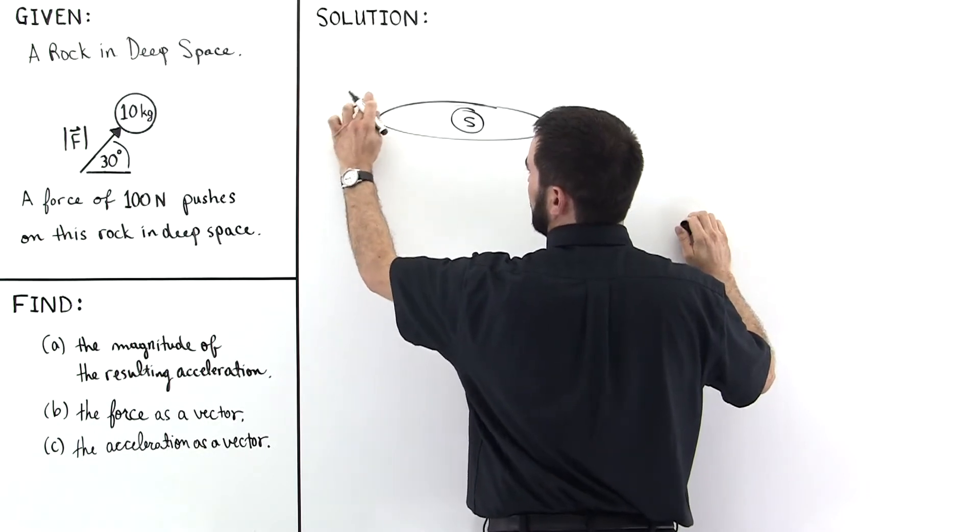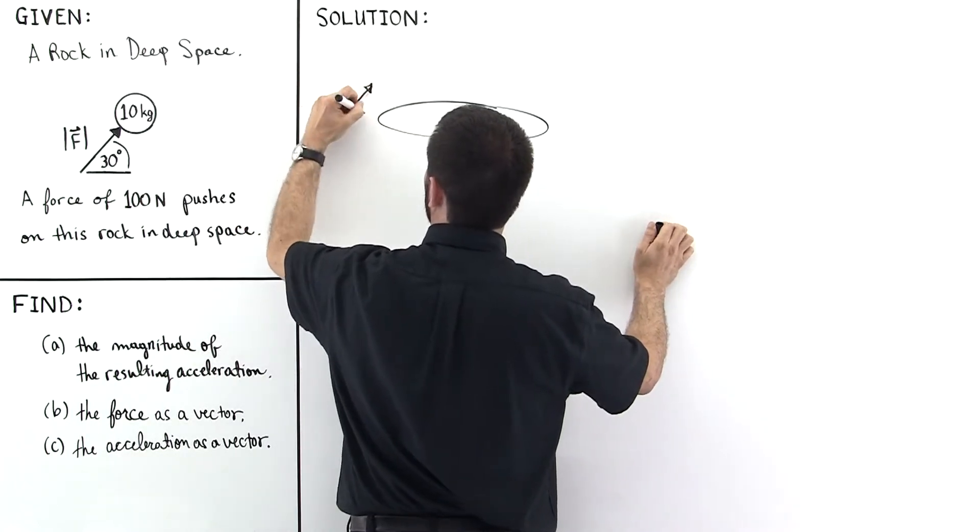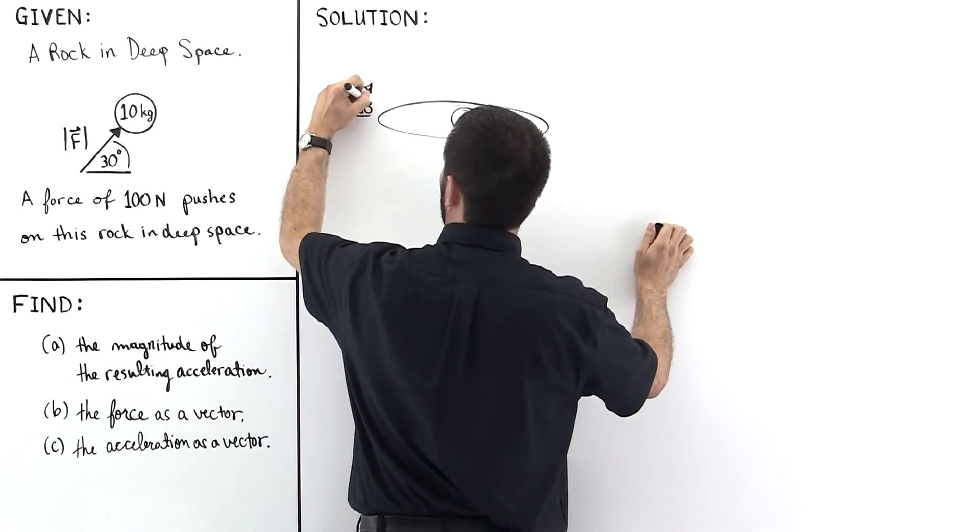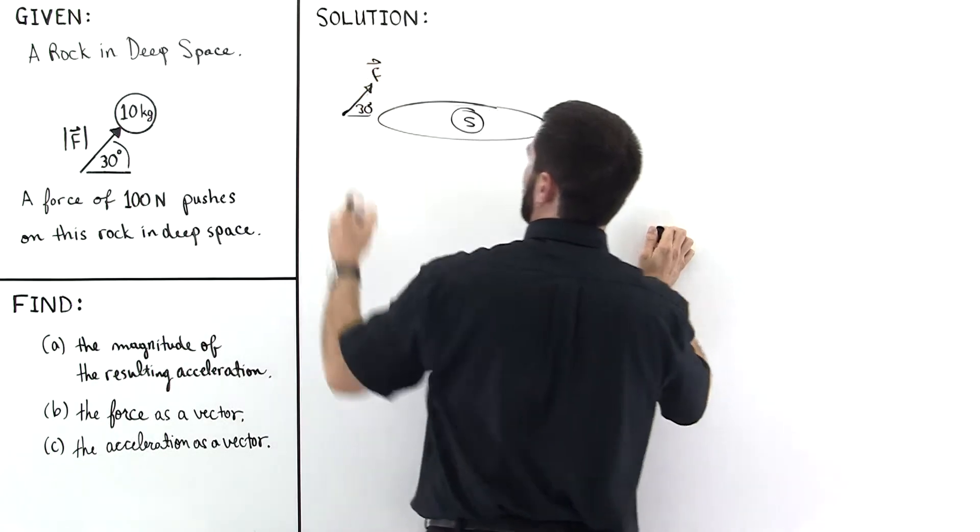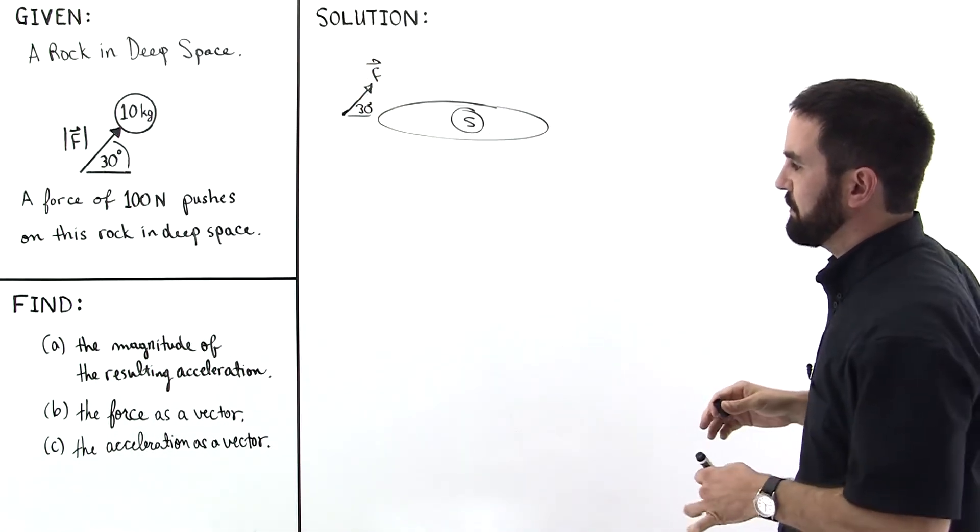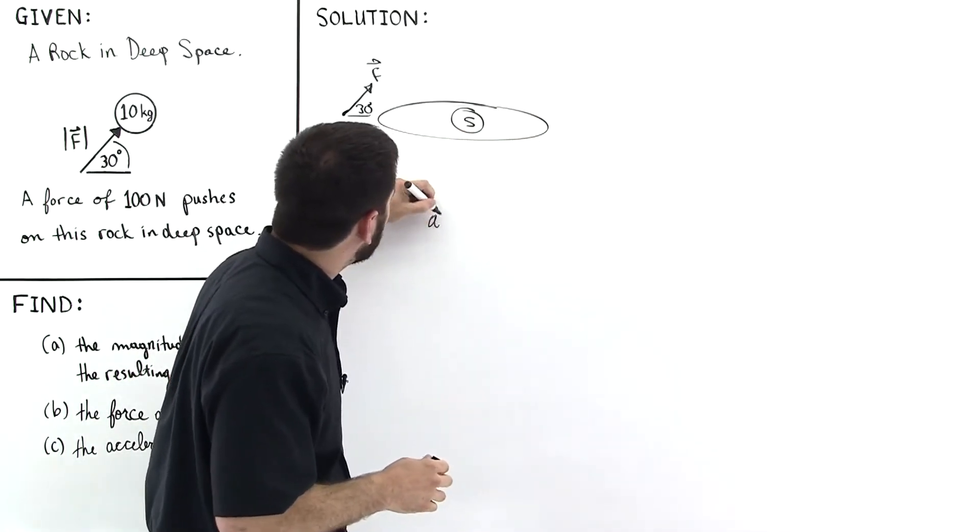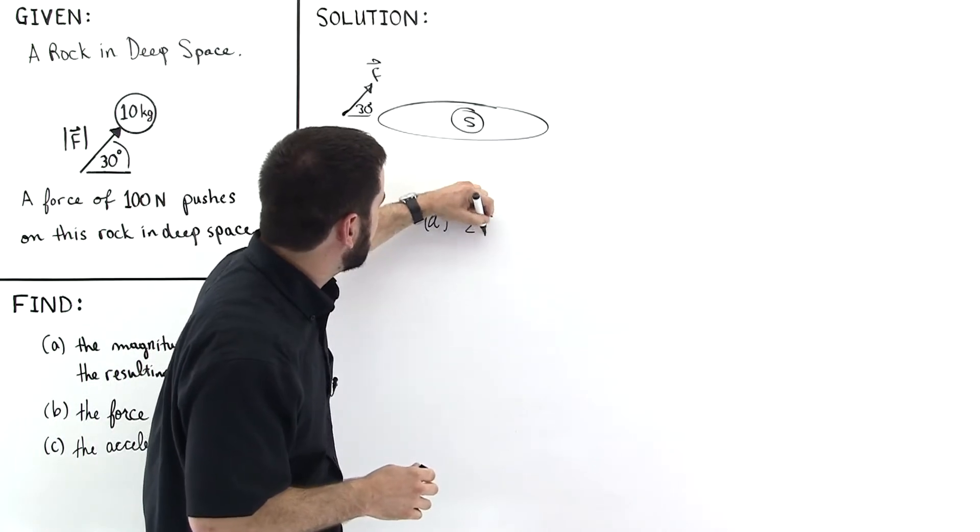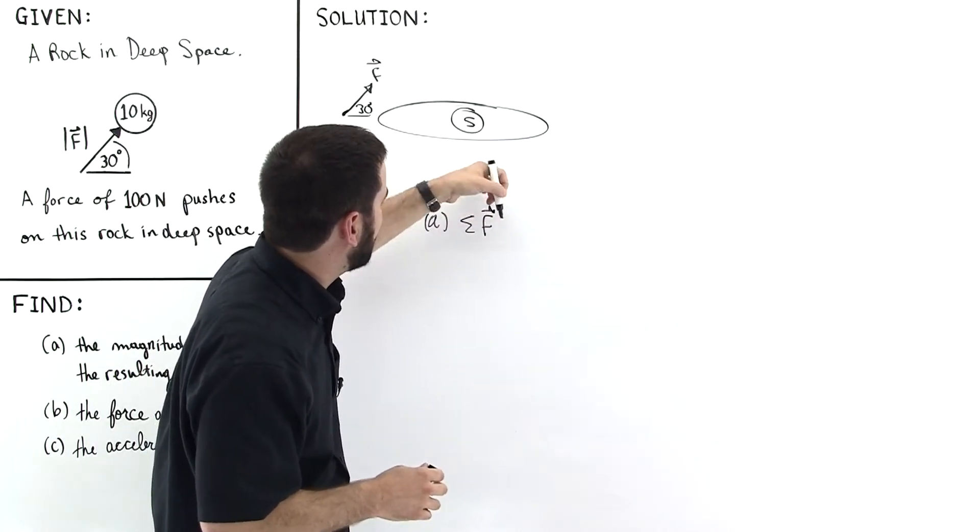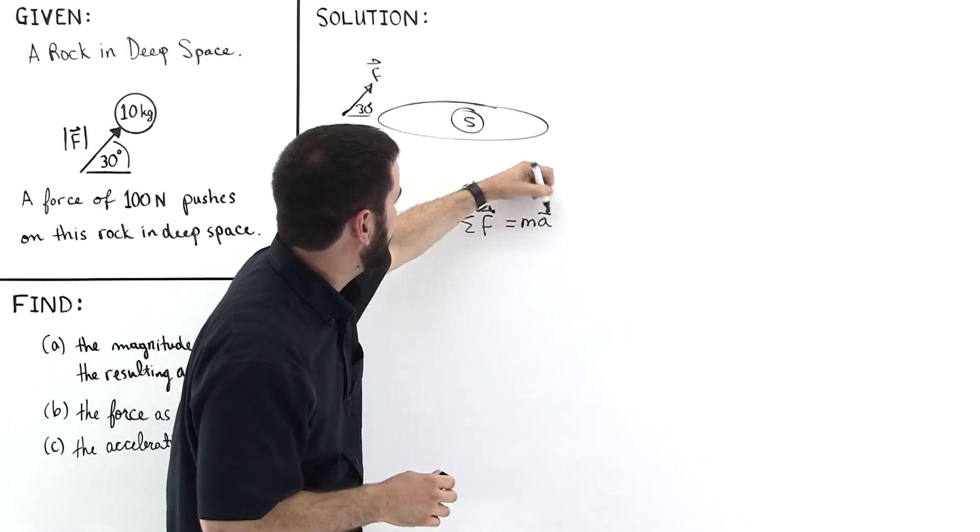So it's up at an angle, let me try to draw it at 30 degrees. It's being pushed on something like this with a force of F. So part A says find the magnitude of the resulting acceleration. Newton's second law says the sum of the forces, the total net force acting on a particle, is equal to mass times acceleration.